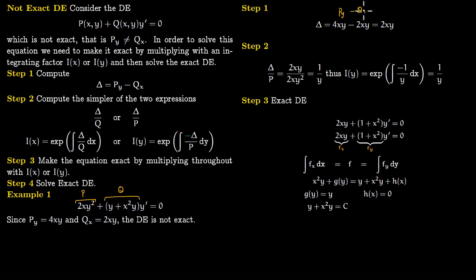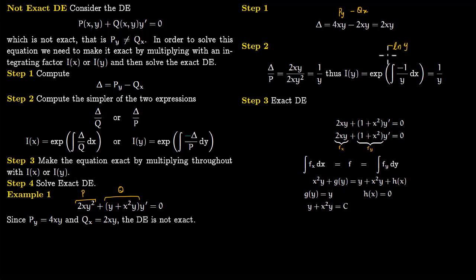We compute delta as P sub y minus Q sub x, which gives 2xy. Looking at the expression, the simplest division is delta over P using 2xy squared, which gives 1 over y. Since the formula uses minus delta over P, we put a minus sign here. Integrating gives minus log of y, which is log of 1 over y. Exponentiating gives the integrating factor I of y equals 1 over y.